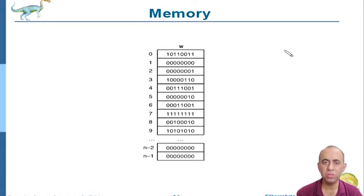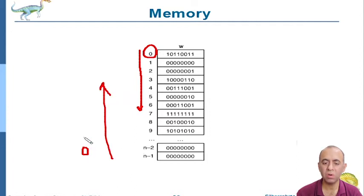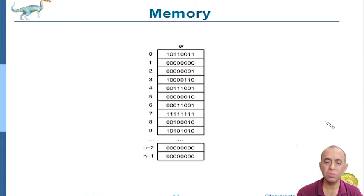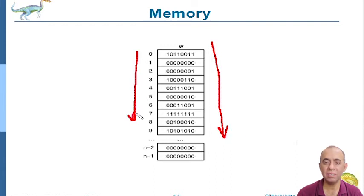If you want to visualize it, main memory looks like this: all the addresses start from zero, which is the lowest address. The addresses simply increment by some number. For example, in a byte-addressable memory, a byte is stored at each address, and the address increments by one: zero, one, two, three, four. There are different addressing schemes you will study in a computer organization course. It's a long list of locations, with every location having a distinct and unique address.